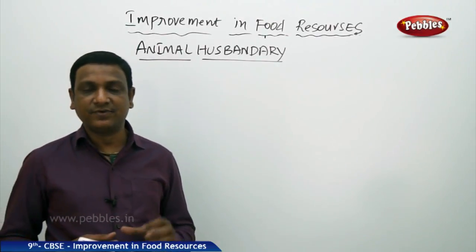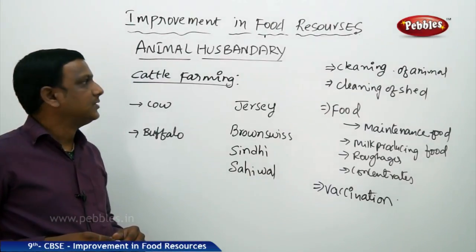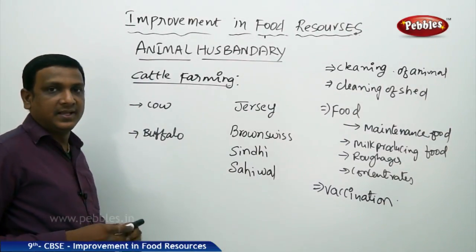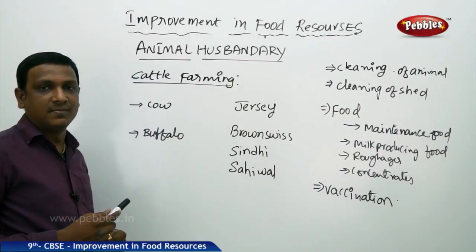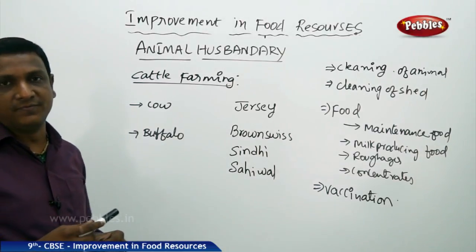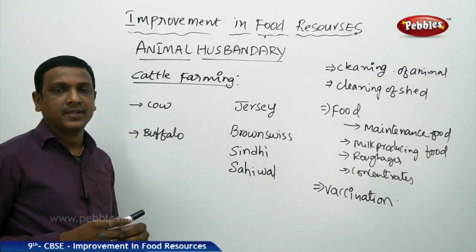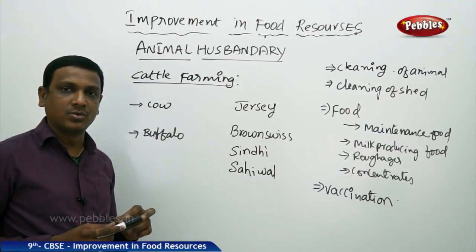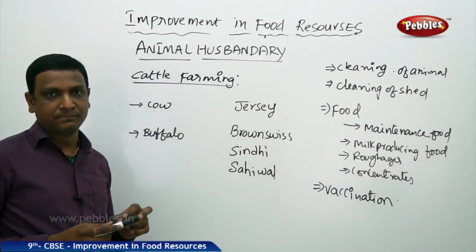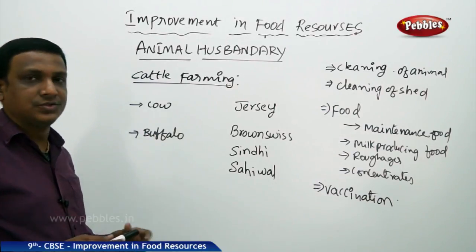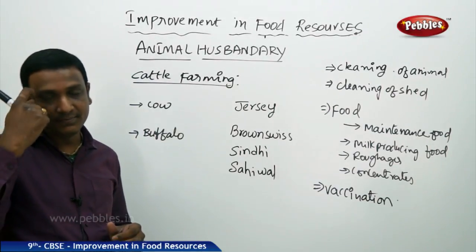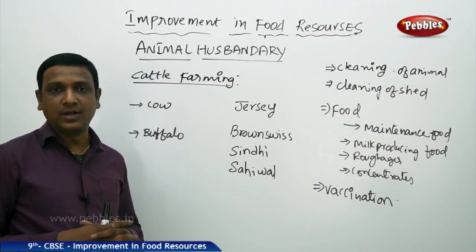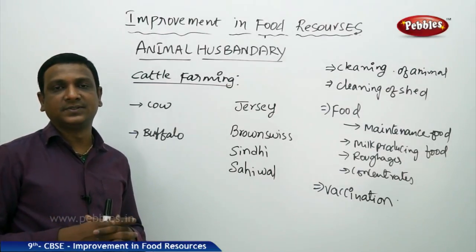In cattle farming, cattle includes cows and buffaloes. In India, cows and buffaloes are used for milk production. Cattle are used for two major purposes: milk production, and drought work — physical labor. Male animals are used to till the land for plowing and to draw bullock carts for transport.